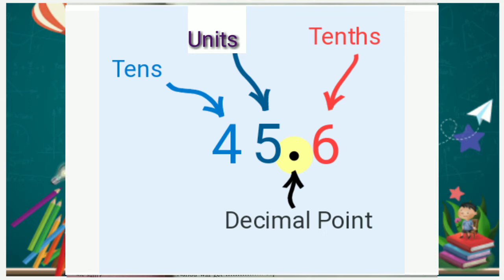Before the point, we write units, tens, hundreds and after the point, we write tenths, hundredths, thousandths.